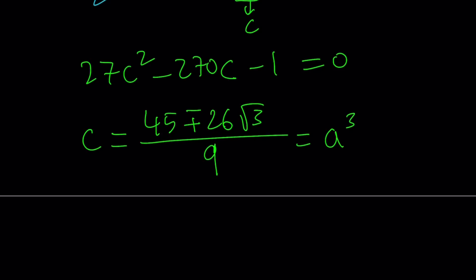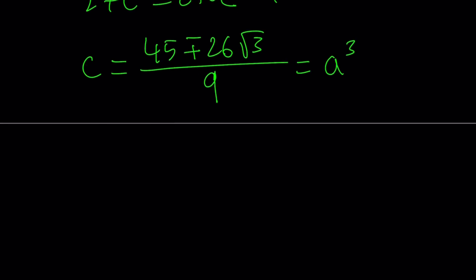But which one? Let's go with the positive. It doesn't matter because a and b are interchangeable. Well, suppose a³ = (45 + 26√3)/9. This indicates b³ is equal to its conjugate. Like this. Or you can switch them around. It doesn't really matter.